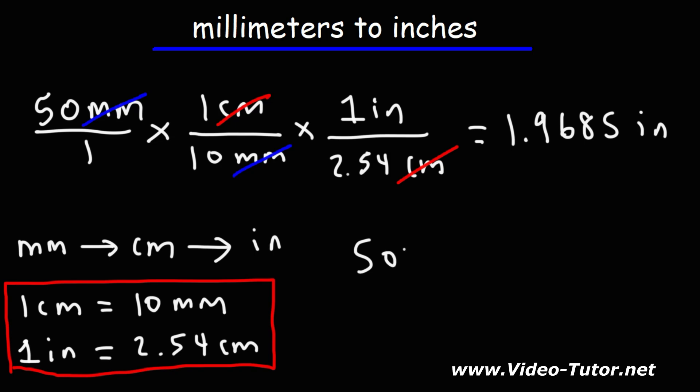So we can say that 50 millimeters is approximately 1.97 inches if we round it. That's how you can convert from millimeters to inches.